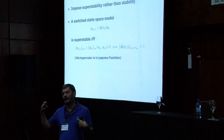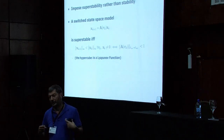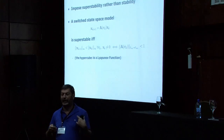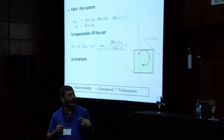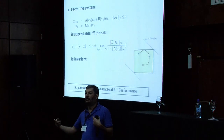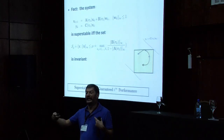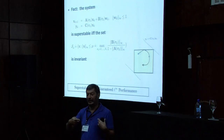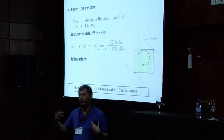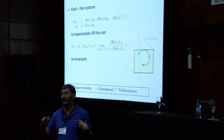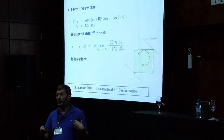Essentially, a system is super-stable if the hypercube is your Lyapunov function. What you gain by this is that if you impose super-stability, you get L-infinity performance for free. The moment you impose super-stability, you can show that there's an invariant set associated with that — you never get outside the invariant set, and therefore you have guaranteed L-infinity performance. There are two reasons to use super-stability: one is guaranteed L-infinity performance, and the second is you get problems that you can actually solve.